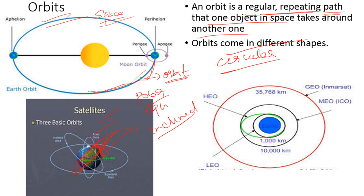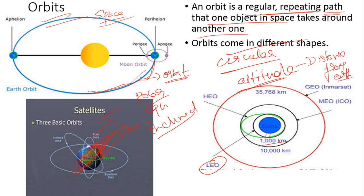Orbits are also classified into three different types based on altitude — that is the distance from the earth's surface: low earth, middle earth, and high earth orbit. If you take low earth orbit, the satellite will be placed below 1,000 kilometers. Medium earth orbit will be between 1,000 to 10,000 kilometers. High earth orbit will be between 10,000 to 36,000 kilometers approximately. So if a satellite is placed at 500 kilometers above the earth surface, it is said to be in low earth orbit.